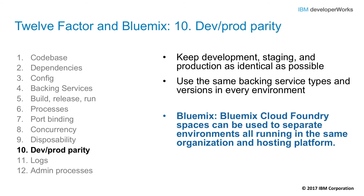Factor number ten: development and production parity. Keep your development, staging, and production as similar as possible — another step to avoid the 'works on my machine' problem. This ties into agile software delivery, continuous integration, and continuous deployment, but really it's about ensuring development and production don't get so far out of skew that one doesn't reflect the other, especially concerning dependencies and backing services. In Cloud Foundry, Bluemix spaces provide separation within the same organization for easy hosting separation and a logical place to implement separation of duties. Where the same instance of a Bluemix catalog backing service is desired, such as a trained Watson service, you can use user-provided services to propagate credentials between spaces.